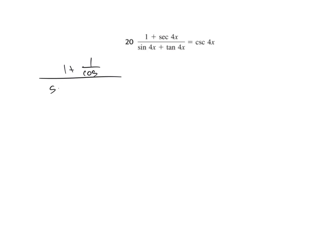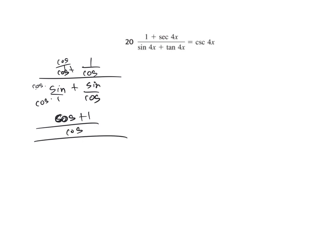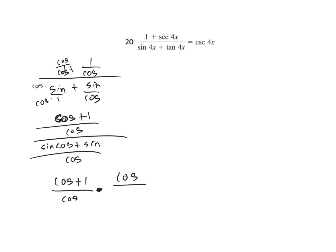Number 20: 1 plus 1 over cosine all over sine plus sine over cosine. Get common denominators — cosine over cosine is 1. On top: cosine plus 1 all over cosine. On the bottom: sine cosine plus sine all over cosine. Keep change flip: cosine plus 1 over cosine times cosine over — factor out a sine from the bottom to get 1 plus cosine. The cosines reduce and the 1 plus cosines reduce, leaving 1 over sine, which is cosecant.